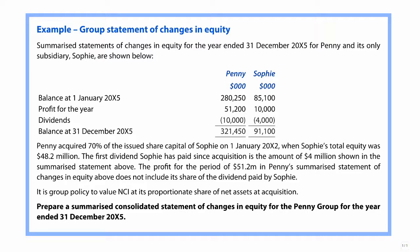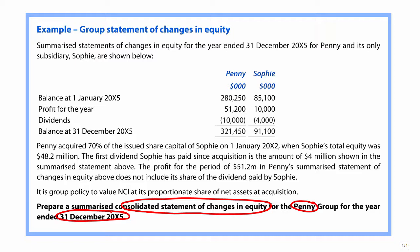Looking at the requirement first, it wants us to prepare the consolidated statement of changes in equity for the Penny Group, for the year ended December 20X5. So December 20X5 is the end of the year — that will be our closing figures. You're not going to get a question like this in the real exam, but it helps you understand the group statement of changes in equity.